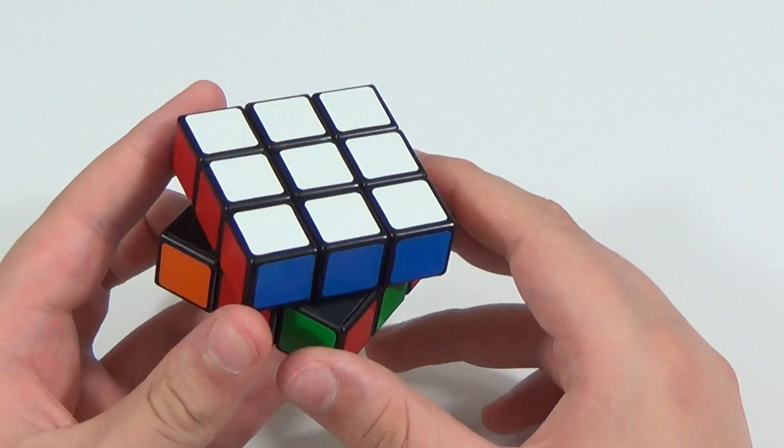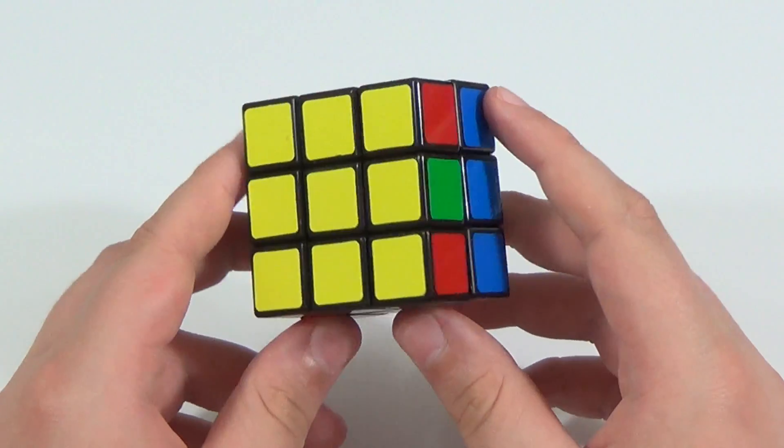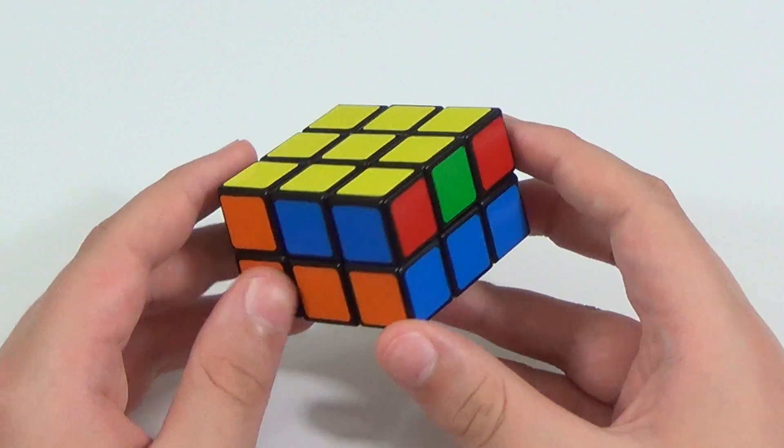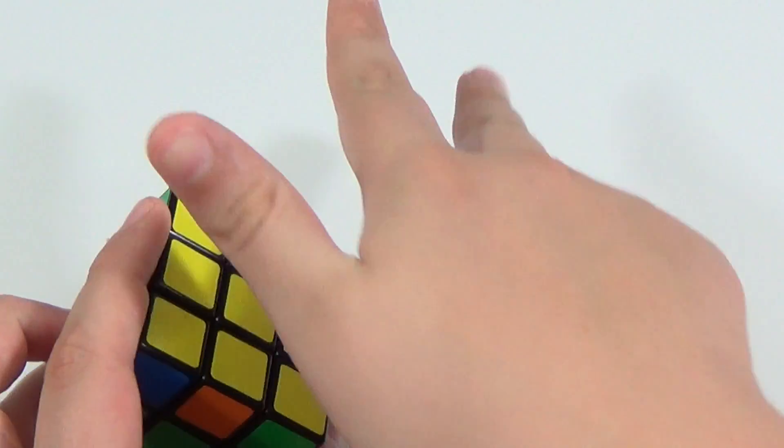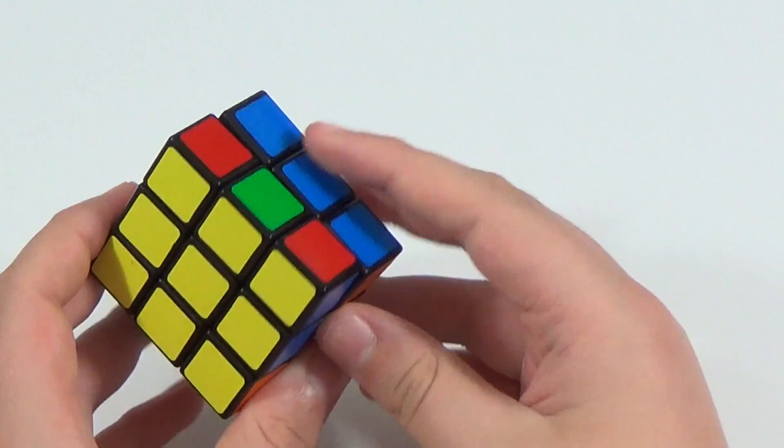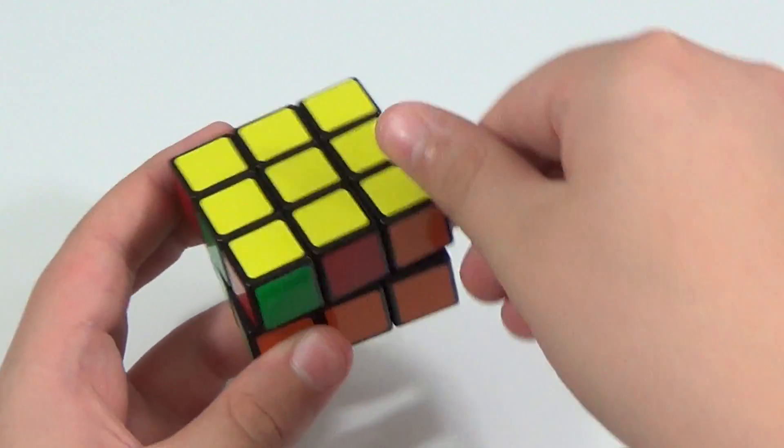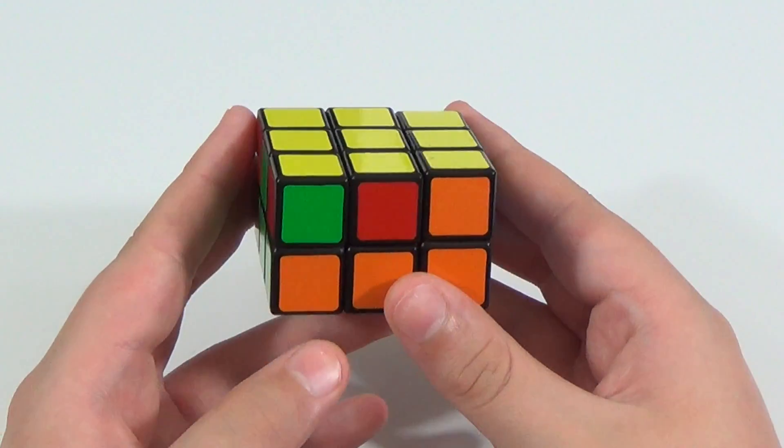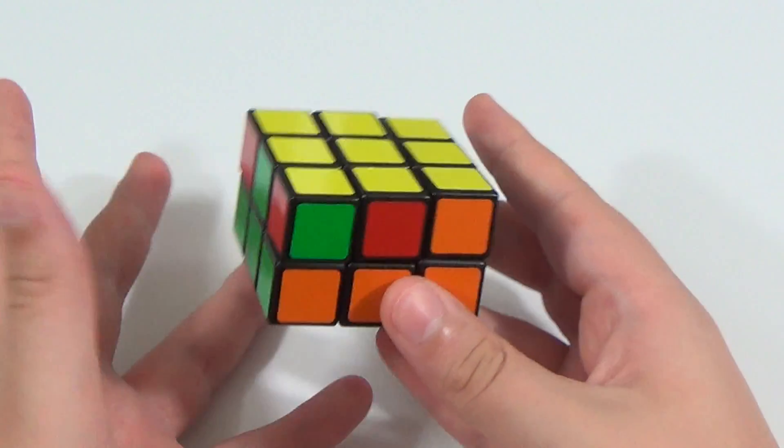Okay, so moving on to last layer corners. Now the first thing you want to look for are headlights. And headlights are basically just two of the same color going out in this direction, sort of like headlights going out like that. And so here we have headlights here. So we're going to take them and put them to the left so they're going this way. Now if you don't have headlights, just do the algorithm I'll be showing you now, and you will have headlights.